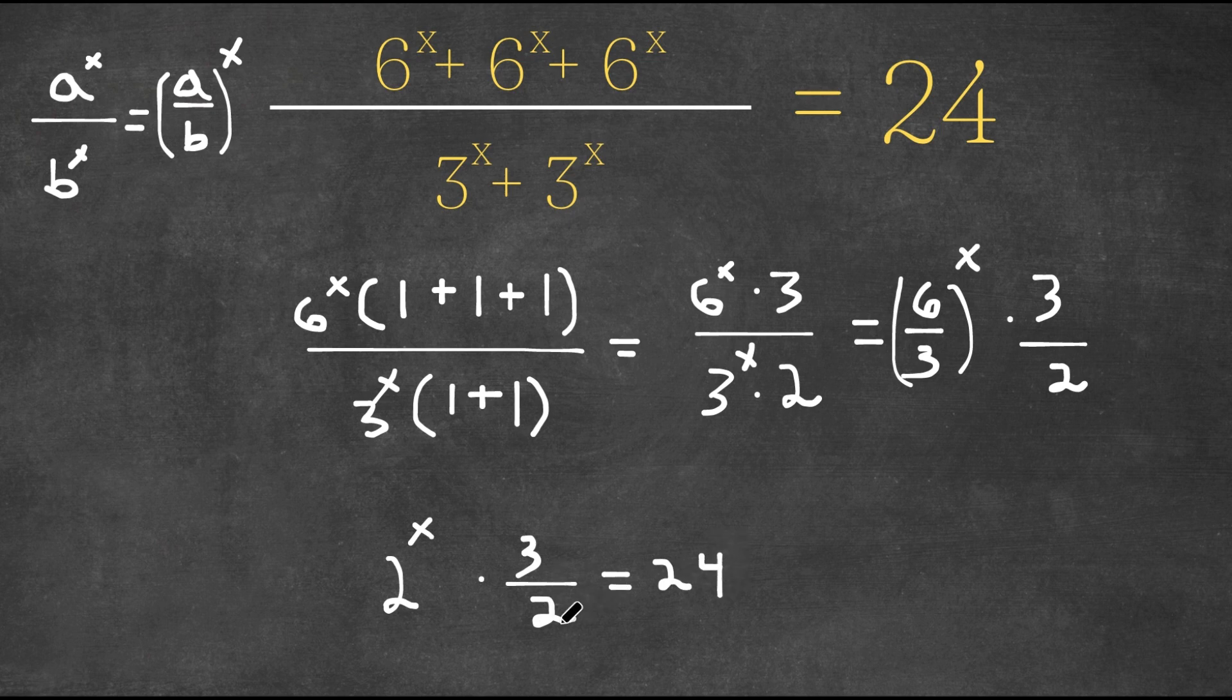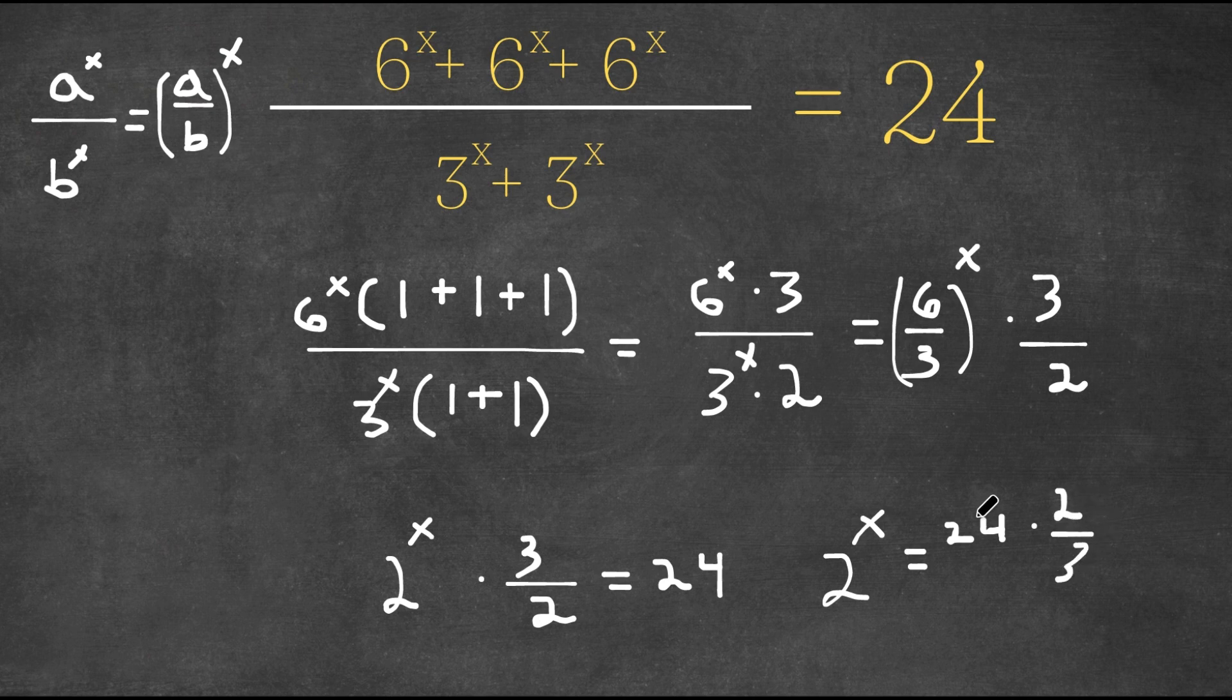Now if we divide by 3 over 2 on both sides, then we would get 2 to the power of x equals 24 times 2 over 3, because remember we're multiplying by the reciprocal. 24 times 2 is 48, 48 divided by 3 is 16.